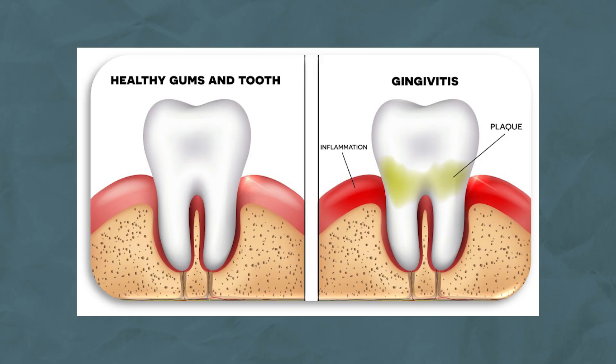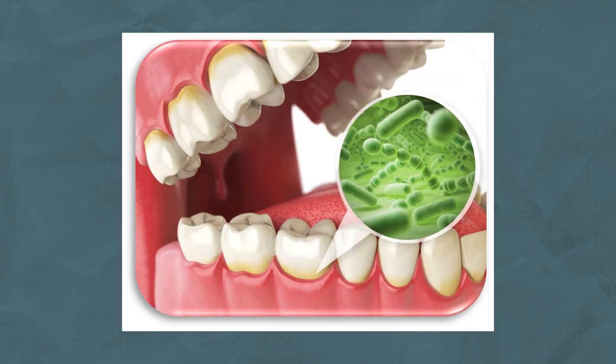Gingivitis simply means inflammation of the gums and is a very common condition. A classic sign would be that your gums may bleed easily after brushing your teeth. Gingivitis is caused by dental plaque, which is a collection of different types of bacteria that naturally grow around your teeth. Your body's natural protective response to these bacteria is the process of inflammation, which causes your gums to become red, swollen, and start to bleed easily.